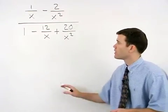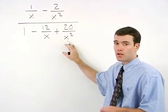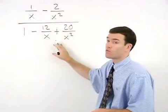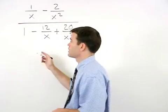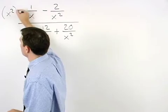The common denominator for x, x squared, x, and x squared is x squared. So to get rid of all of our little fractions, we multiply top and bottom of the complex fraction by x squared.